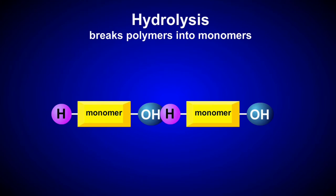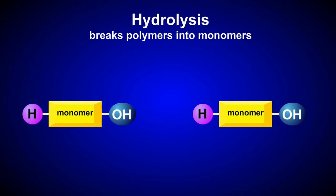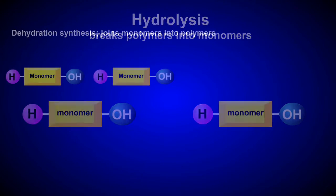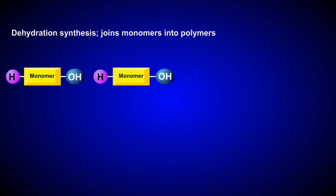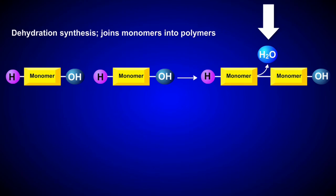Let's do a quick recap. During dehydration synthesis, monomers join to form polymers, and water is released. The opposite happens during hydrolysis, where water is added to the reaction to break a polymer into monomers.